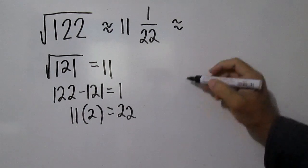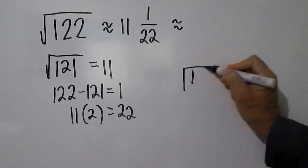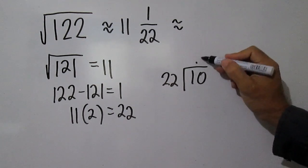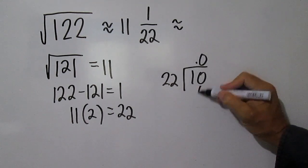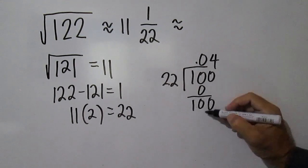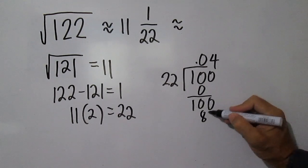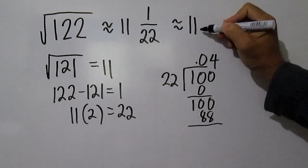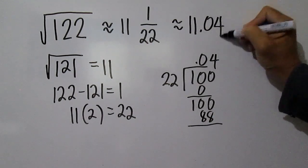Divide 1 by 22. The square root of 122 is equal to 11.04.